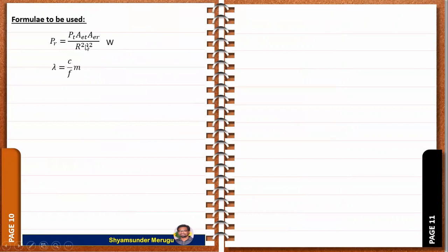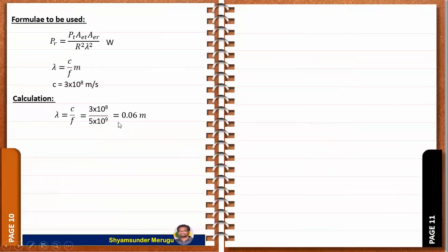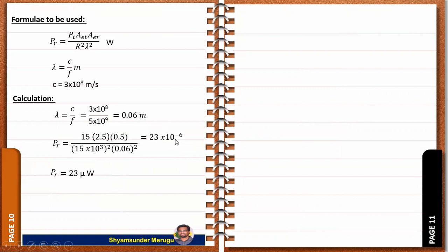The formula to be used is PR equal to PT·AET·AER divided by R²λ². Lambda is found from λ equal to C/F, where C is 3×10⁸ m/s. Substituting values, lambda equals 0.06 meters. Now substituting all values in the PR expression, we get PR equal to 23×10⁻⁶ watts, which is 23 microwatts. Therefore the received power is PR equal to 23 microwatts.